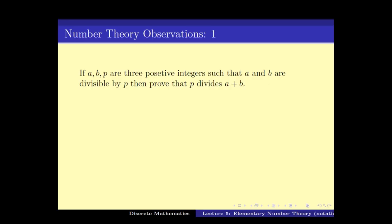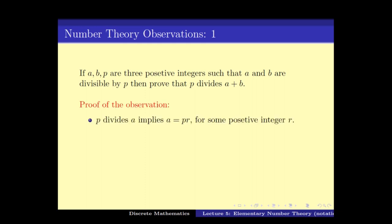So let's see why this is true. All of these things should follow from the basic definition of division. Since p divides a, this implies that a can be written as p times r for some positive integer r. Similarly, since p divides b, b equals p times s for some positive integer s.